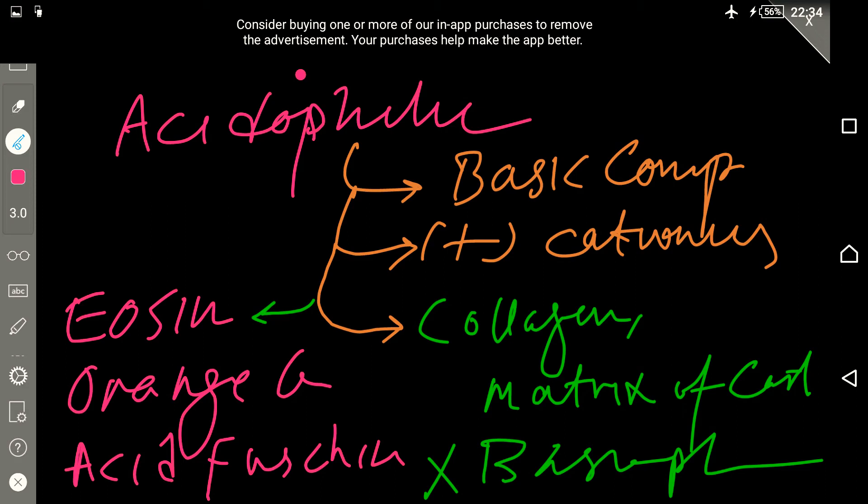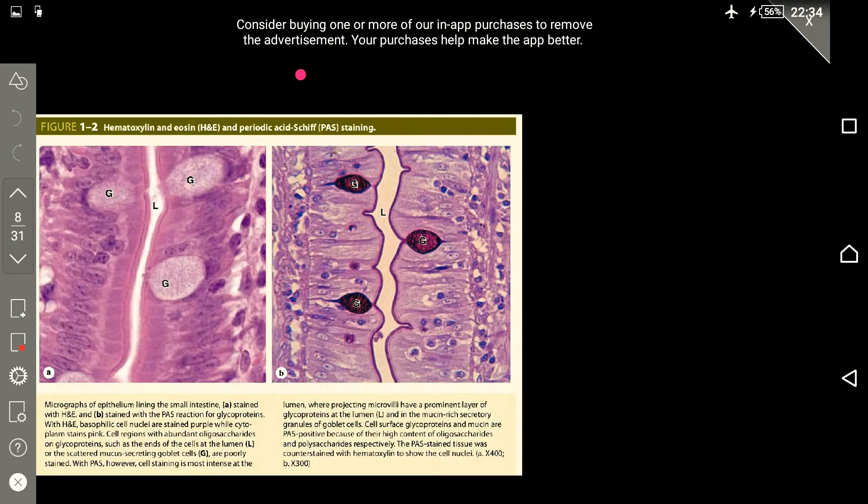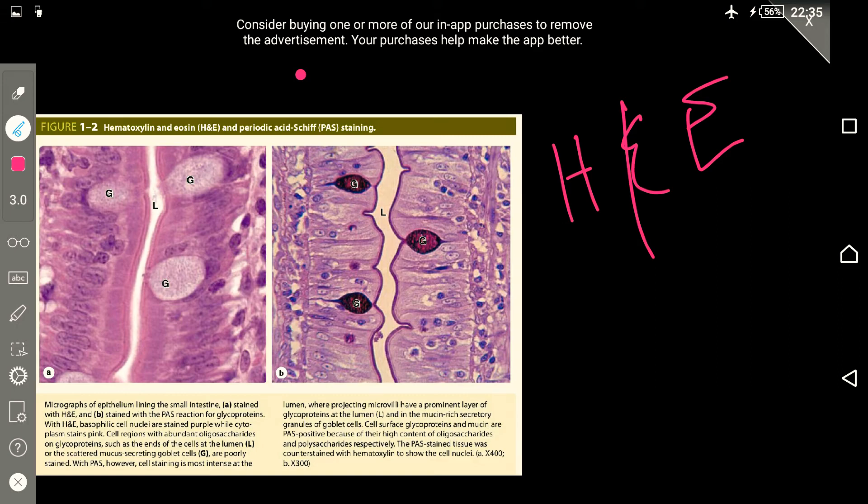Now we're ready to go forth. To use the dyes, we don't just use one type of dye usually. They're mostly used in combination, and one of the most commonly used combinations is H and E, or hematoxylene and eosin.